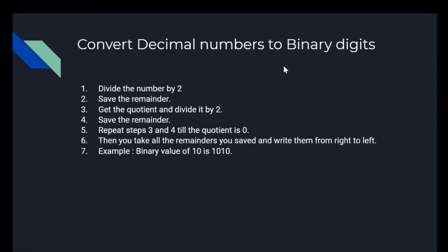Now we're talking about converting decimal numbers to binary digits. You divide the number by 2, then save the remainder; divide the quotient by 2 and save that remainder, repeating until the quotient is 0. Then you take all the remainders and write them from right to left. For example, the binary value of 10 is 1010.